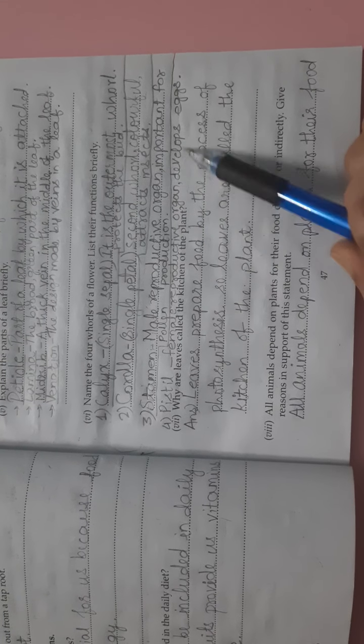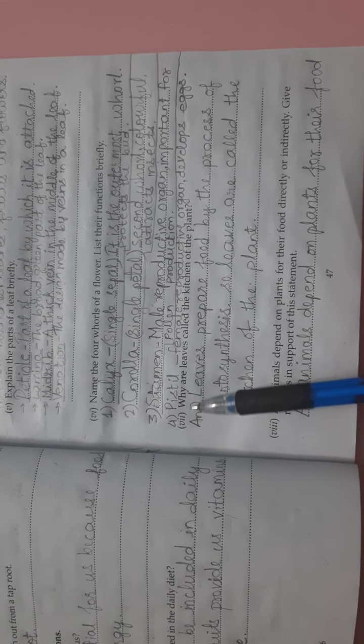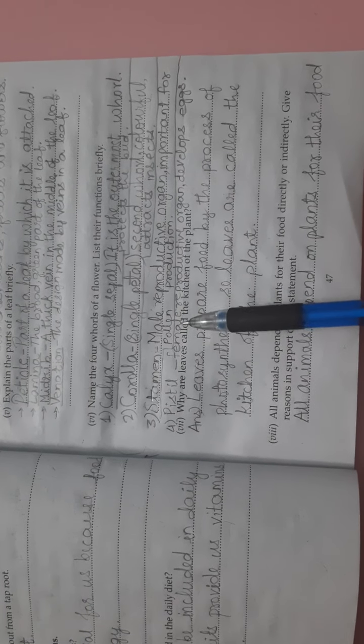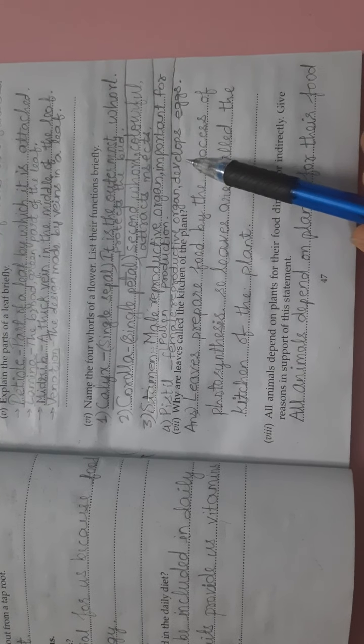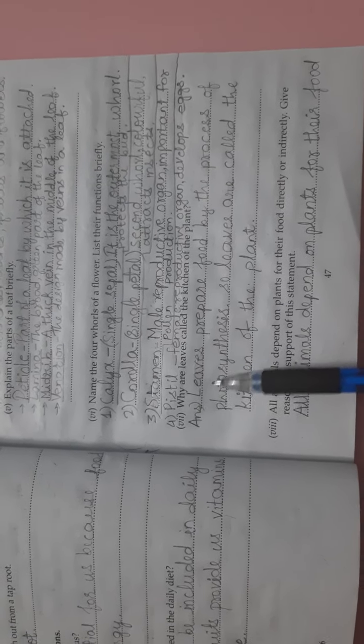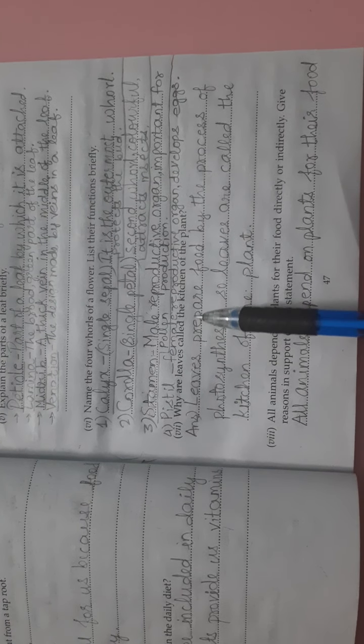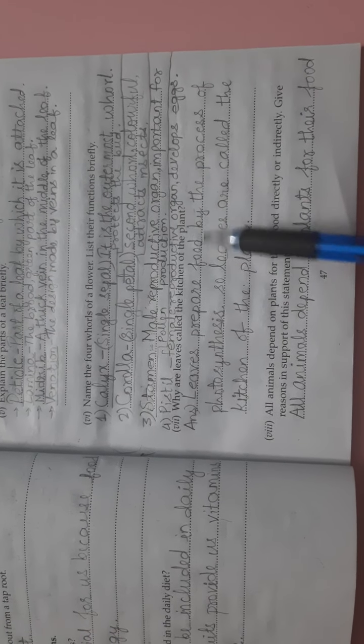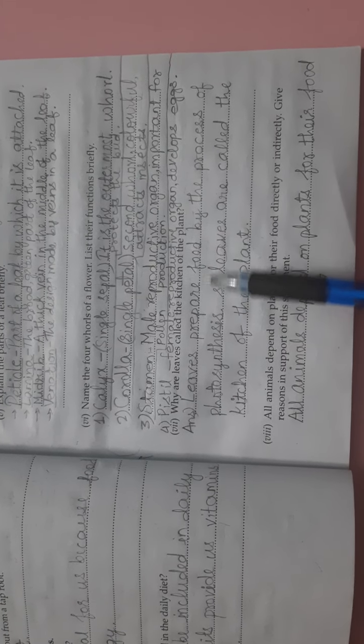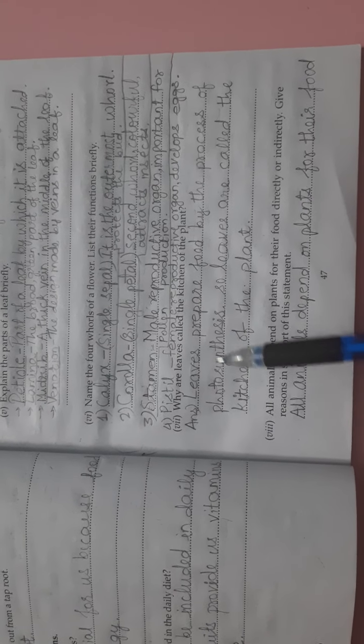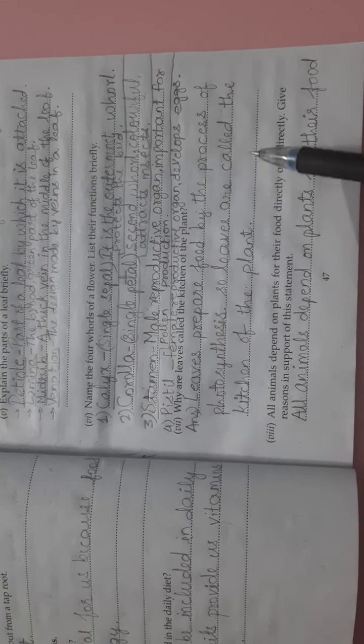Seventh, why are leaves called the kitchen of the plant? Answer: Leaves prepare food by the process of photosynthesis, so leaves are called the kitchen of the plant.